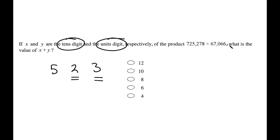So this problem is actually very straightforward. It's just saying, when I multiply these together, what's the tens digit? What's the units digit? And then I'm going to add them together.